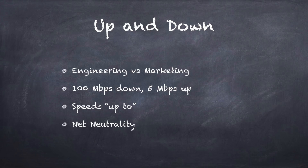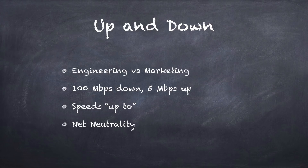Marketing also uses 'up to' speeds. You may be promised 100 megabits per second, but that's just the maximum — very often you're at a fraction of that depending on usage in your neighborhood and conditions. Net neutrality comes into this too: videos may stream really well from services like Netflix and Hulu that pay extra for faster lanes, but transferring files yourself or using other sites may be much slower because networks put traffic into faster and slower lanes.